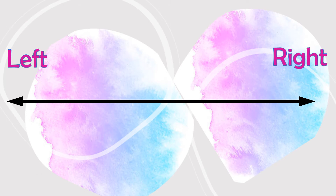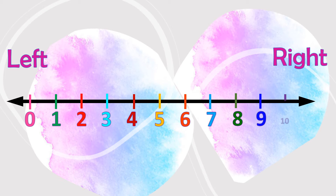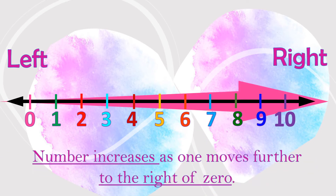Let's try to pin the numbers on the number line. We start from 0, then we count on from 1 to 10. So you see, the number increases as one moves to the right of 0.